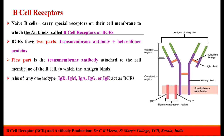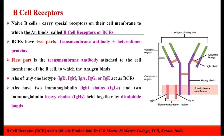The transmembrane antibody can be of any one isotype like IgD, IgM, IgA, IgG or IgE, and these antibodies act as the antigen binding site of the BCRs. These antibodies have two light chains and two heavy chains which are held together by the disulfide bonds. These antibodies are also called membrane immunoglobulin as they are attached to the plasma membrane of B-lymphocytes.